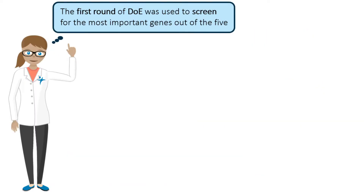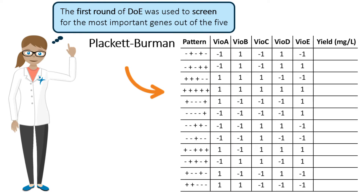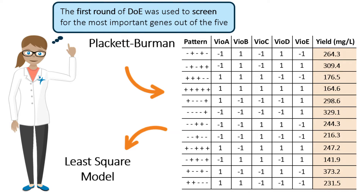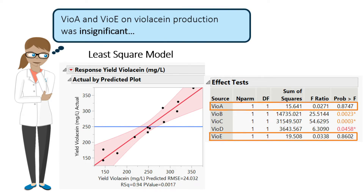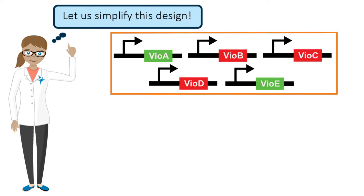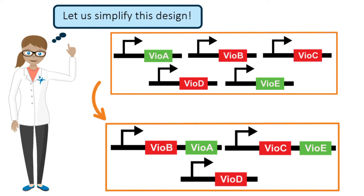The first round of DOE was used to screen for the most important genes out of the five. A Plackett-Burman design was used to produce the following table. This table includes 12 violacein pathway arrangements with each individual gene component driven by either a strong promoter, plus one, or a weak promoter, minus one. After assembling these 12 constructs, the yield of violacein was recorded and a least squares model was generated. From the model, the authors found that the effects of VIO A and VIO E on violacein production were insignificant regardless of promoter strength. This allowed them to reduce the gene expression design space by combining VIO A and VIO E with the important genes in synthetic operons, resulting in VIO AB, VIO D, and VIO EC. The number of factors had been reduced from five to three promoters.